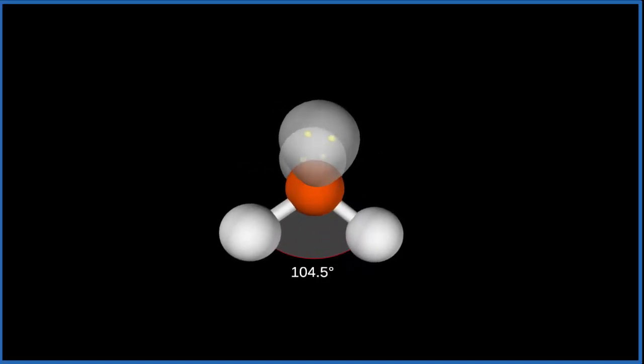That's why we have a bond angle. Instead of the 109.5, the ideal angle, we end up with 104.5. So this is the bond angle for H2O water.